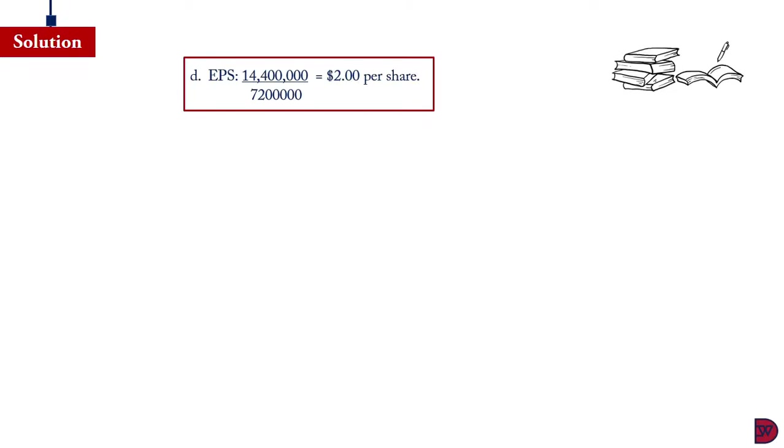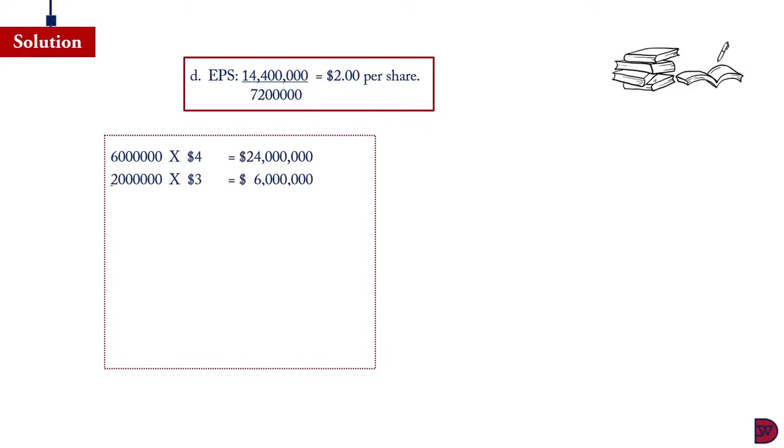When we come to the last assumption, we have to calculate the value of the existing 6 million shares at the market price before the right issue was done. That will be 6 million times $4, which will give $24 million. And the right issue is 1 for 3. When we do the 6 million by 3, we will get 2 million shares. And the price was $3, giving $6 million. The existing shares plus the right issue, which is 8 million shares, has a value of $30 million. We have something called the theoretical exercise price, which is the inherent value of the share. That is going to be the value of the share divided by the total number of shares. The 30 million divided by 8 million will give $3.75 per the right share.